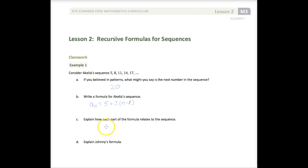Explain how each part of the formula relates to the sequence. Well, a sub n is any term. 5 is the first term. 3 is what gets added. And n minus 1 is how many times to add 3.